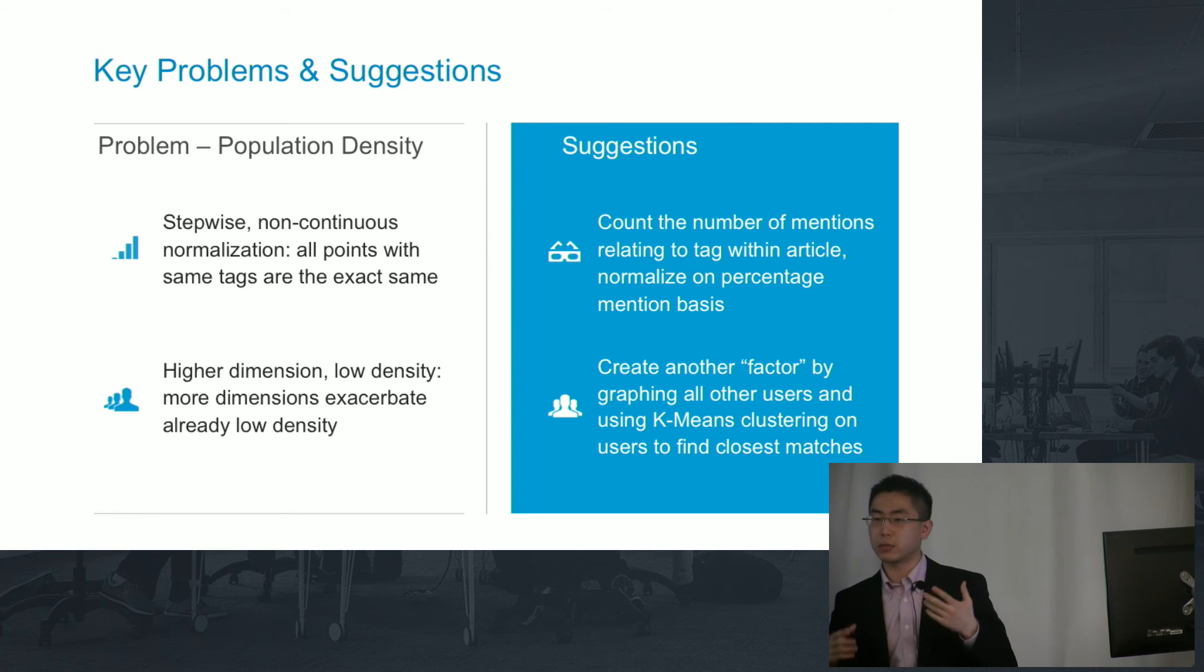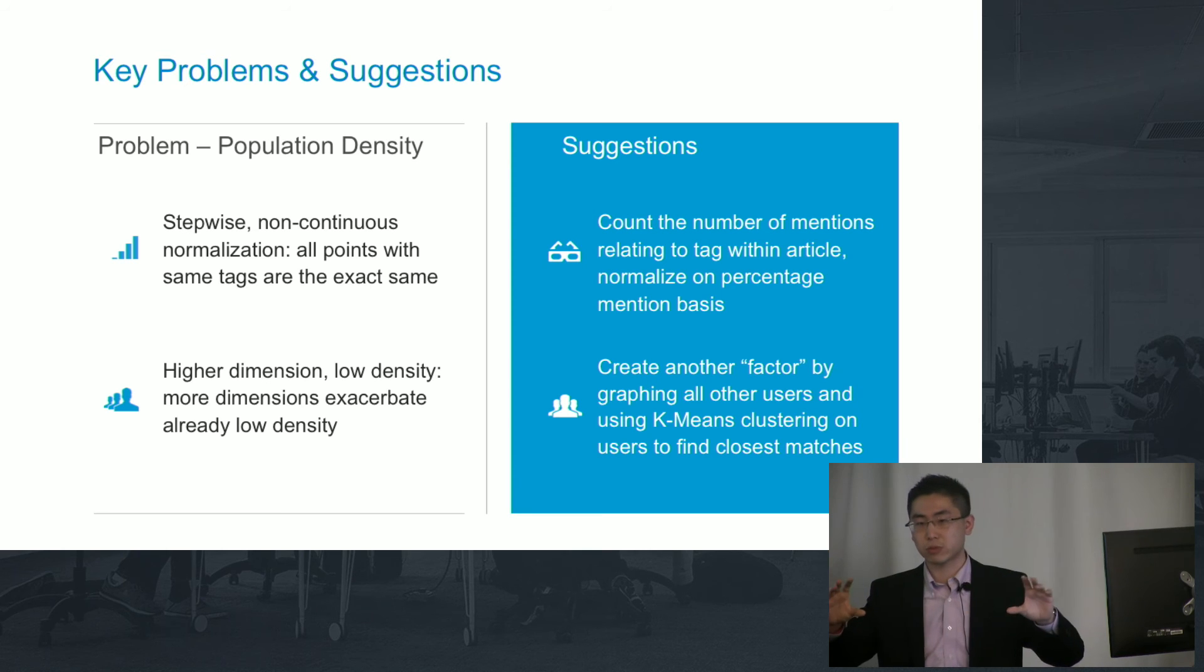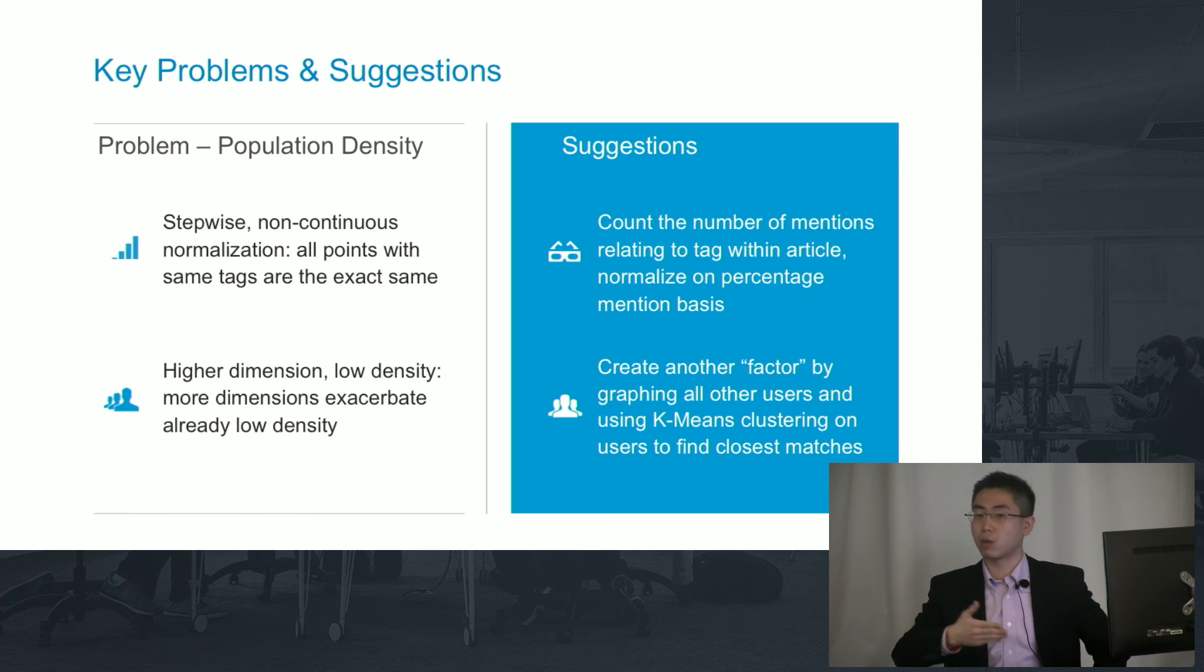Because if you remember, the way we sort of categorize each article was simply just to divide all the tags by the total number of tags. So you had a very even spread between all the article tags. But an article is not equally about wine and cheese. It could be more about wine or more about cheese. And that's something I failed to do.